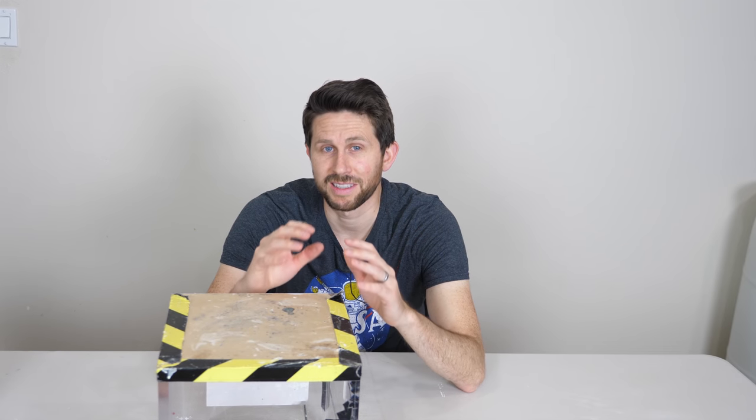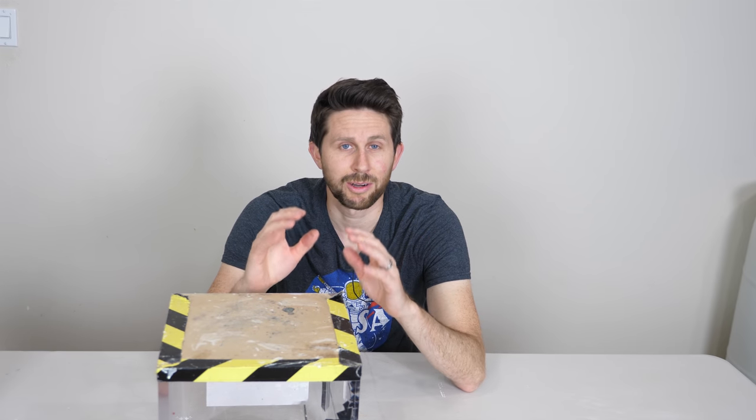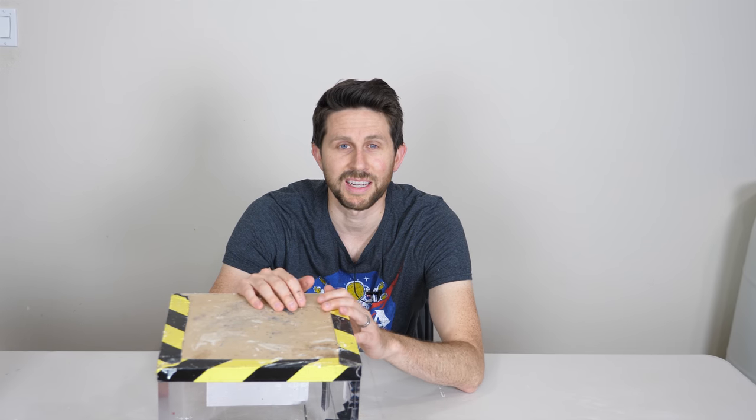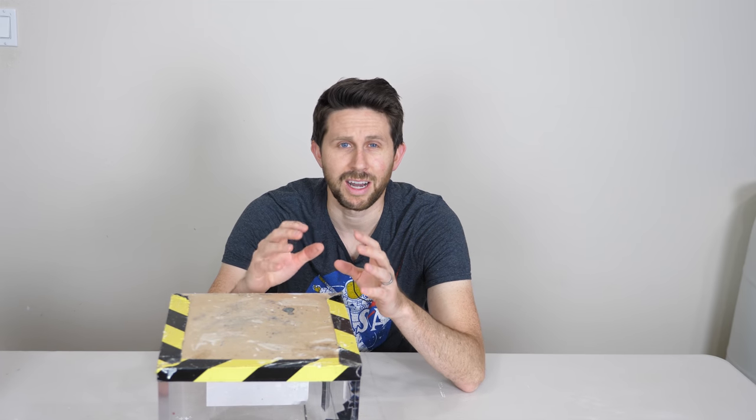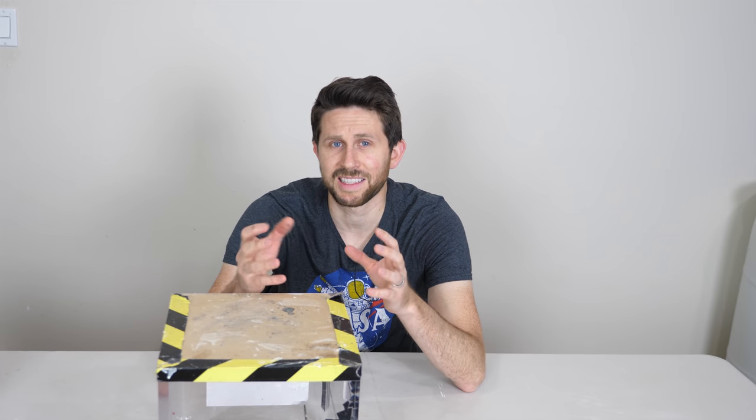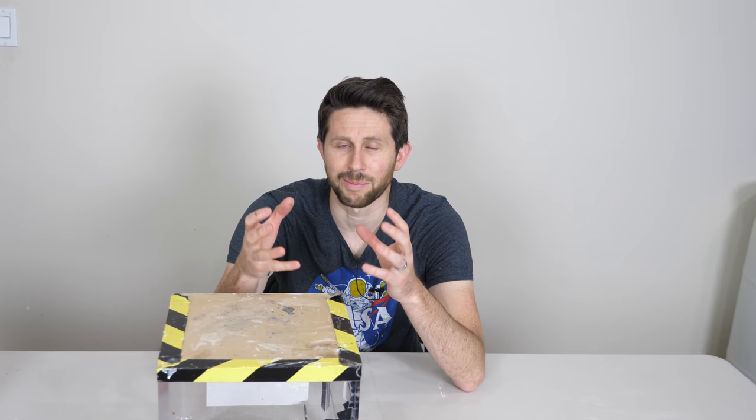So this Black 3.0 is extremely dark. It absorbs over 99.9% of visible light. So you can do some really cool optical effects with it because you can't see the contours of the objects that are painted with it.